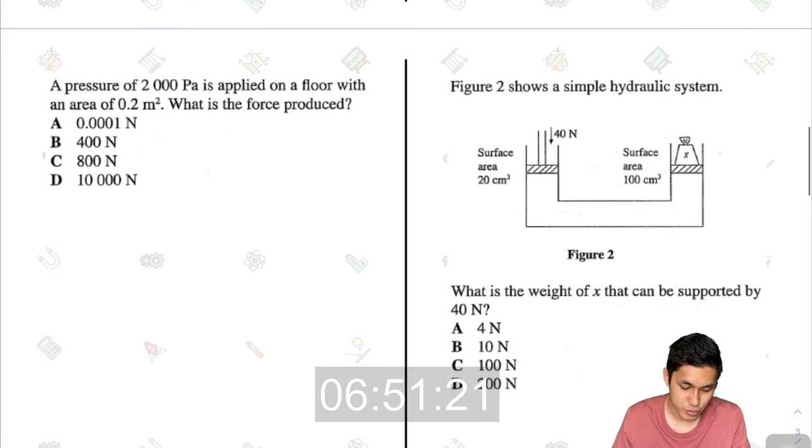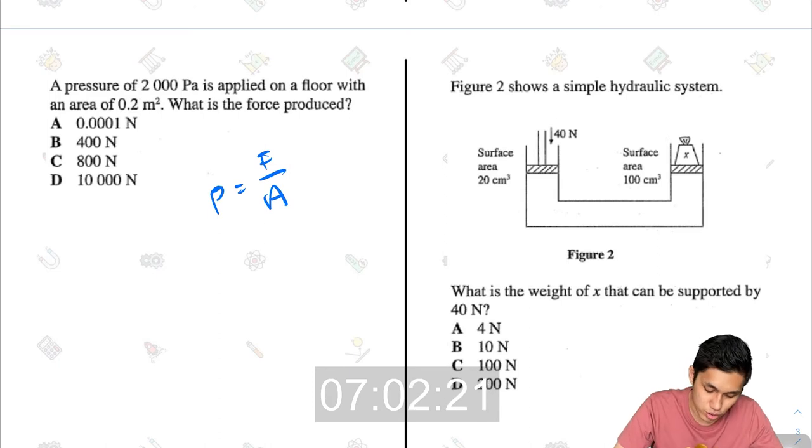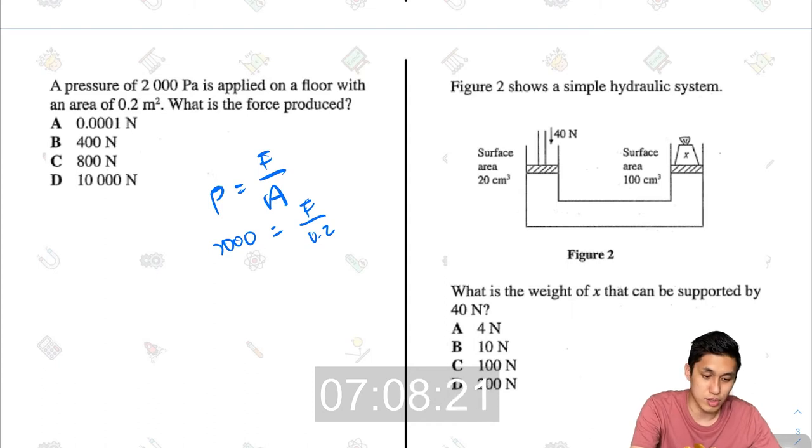A pressure of 2000 Pa is applied on the floor with an area of 0.2 meter square. What is the force produced? We all know that pressure equals force divided by area. So 2000 equals the force divided by 0.2. So 2000 times 0.2, I get 400 Newtons.